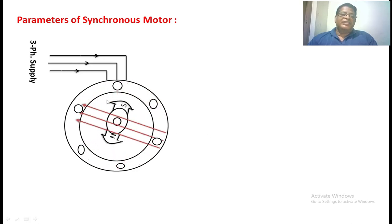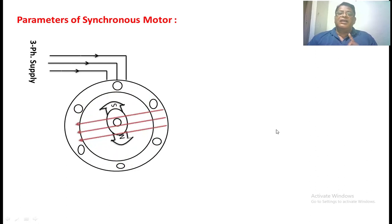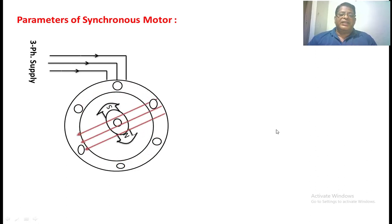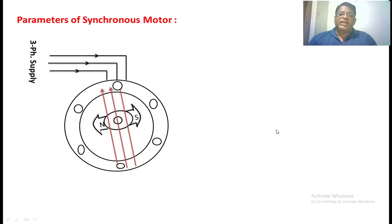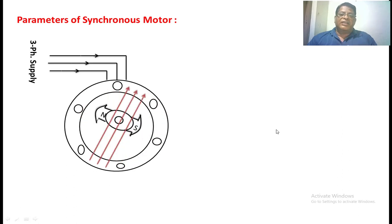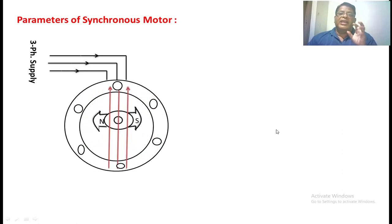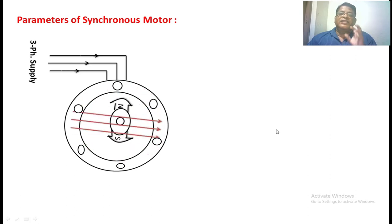Now, what are the parameters of the stator winding? The stator winding is made of copper, so it has some amount of resistance. The first parameter is the resistance of the stator winding. When current is passing through the stator winding, flux will be created, and some amount of flux will be leaking and linking with all the turns, which is also sinusoidal. So a voltage will be induced in the stator winding. To represent this physical phenomenon, we take the leakage reactance for the stator winding.